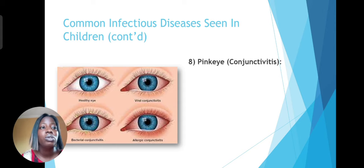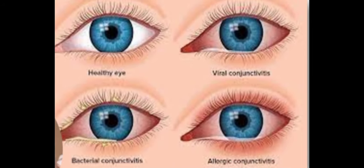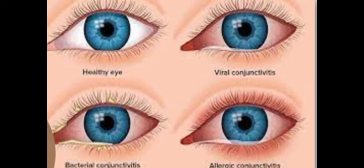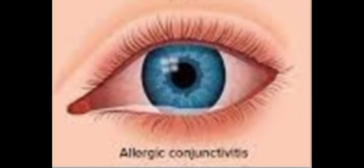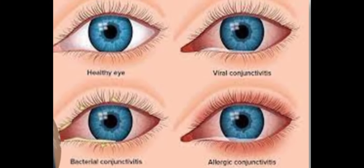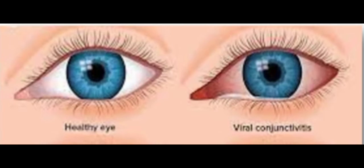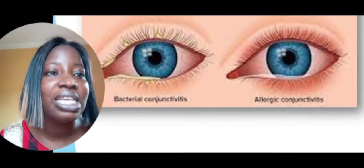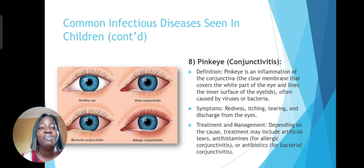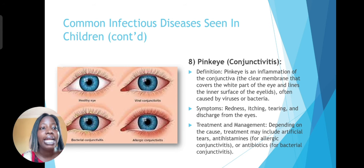We have conjunctivitis, also known as pink eye. There is reddening of the conjunctiva — the clear membrane that covers the white of the eye becomes red. It is often caused by viruses or bacteria and includes symptoms of redness, itching, tearing, and discharge from the eye, with the child constantly rubbing it because of the itching. Treatment depends on the cause — artificial tears may be given, antihistamines for allergic conjunctivitis, and antibiotics for bacterially caused conjunctivitis.